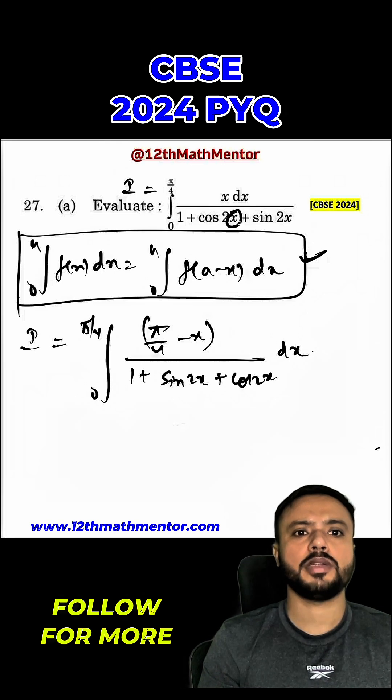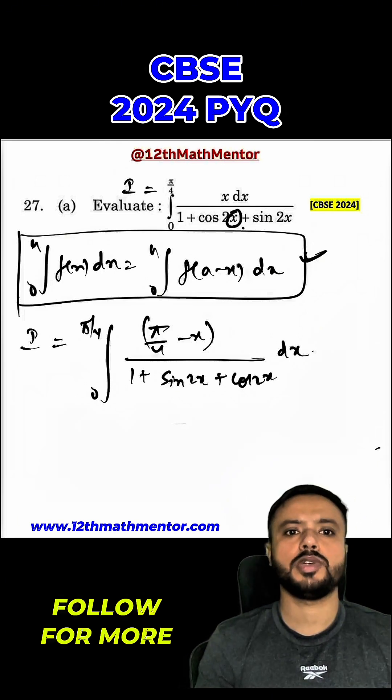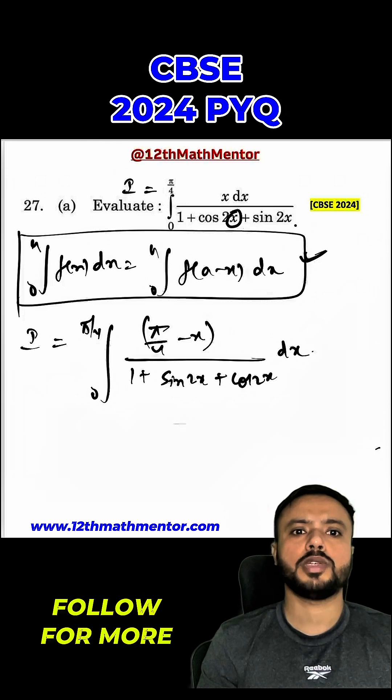Because when you replace this x with pi by 4 minus x, it will give you pi by 2 minus 2x. So, cos of pi by 2 minus 2x would be sine 2x. And sine of pi by 2 minus 2x would be cos 2x.